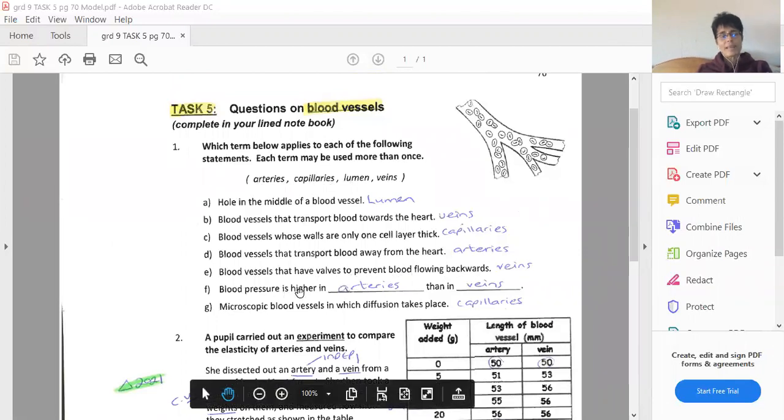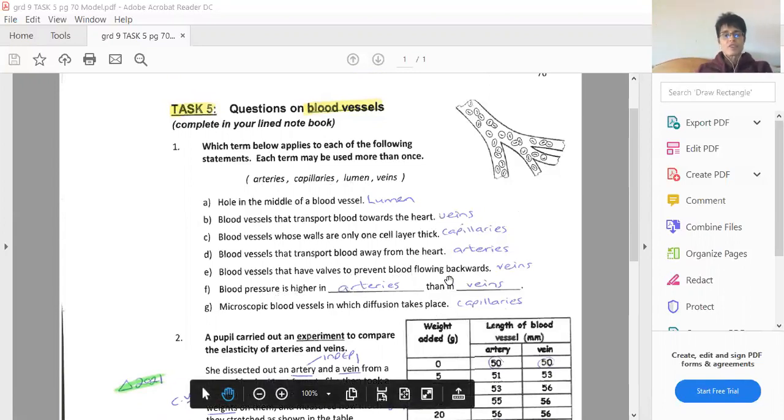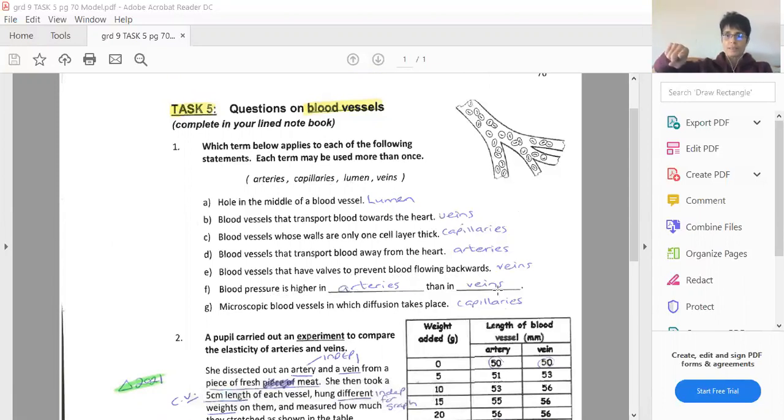Blood pressure, well, it's going to be high in arteries because they take blood away from the heart. So the heart is forcibly pumping blood through them and that's why they stretch and recoil as the blood passes through and that's what you're feeling when you push your blood vessel against a bone when you take your pulse. And blood pressure is lower in veins because they're much further from the heart.